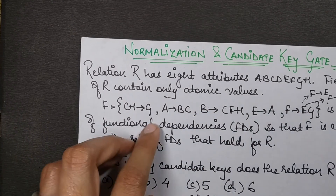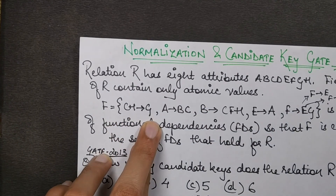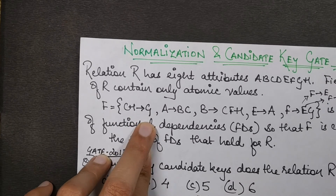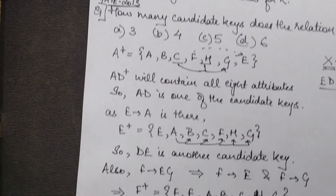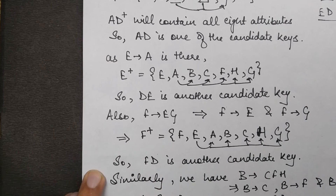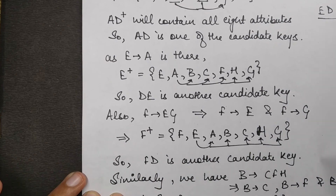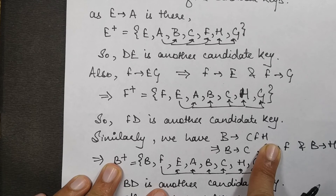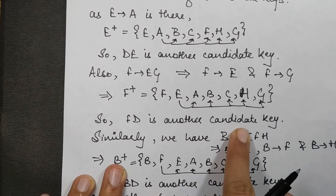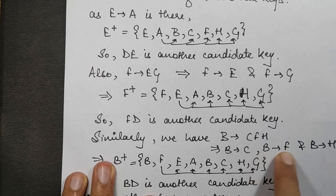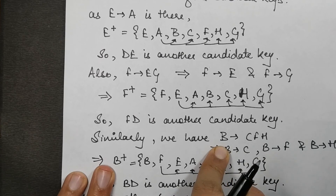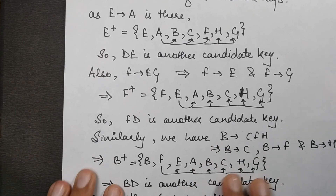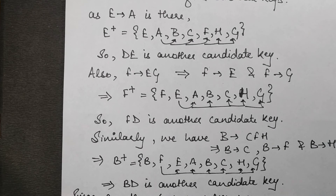From this, FD is another candidate key. Also, from B→CFH, we can split to get B→C, B→F, and B→H. Since B→F and F→E (from earlier), B can also reach the required attributes. Concatenating D gives us BD as another candidate key.